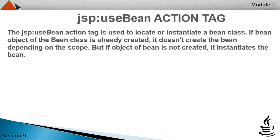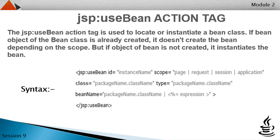JSP useBean action tag: the JSP useBean action tag is used to locate or instantiate a bean class. If a bean object of the bean class is already created, it doesn't create a new bean depending on the scope. But if an object of the bean is not created, it instantiates the bean. You can have a look at the syntax of useBean.